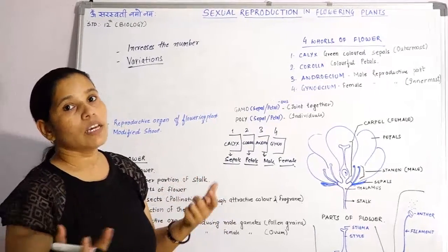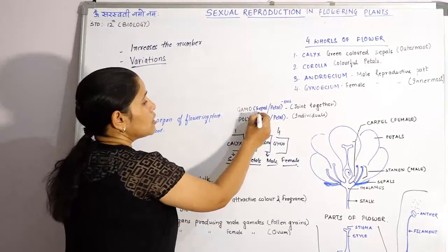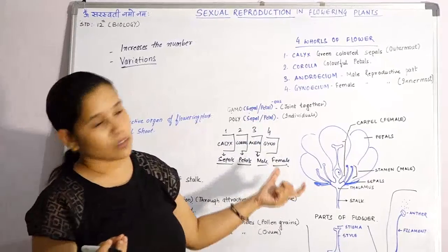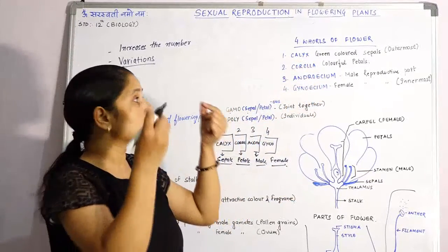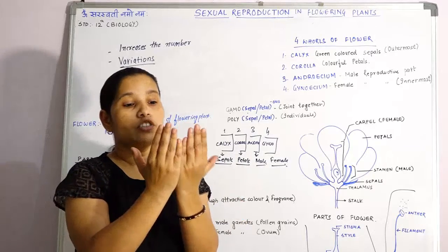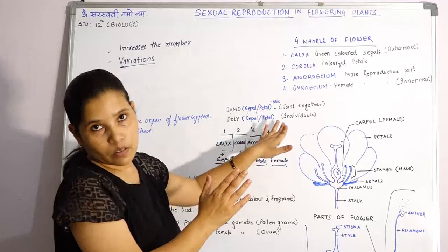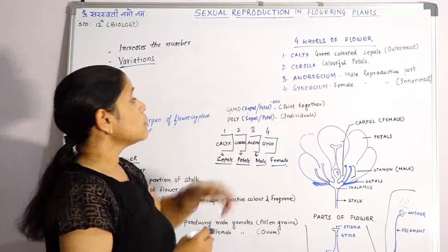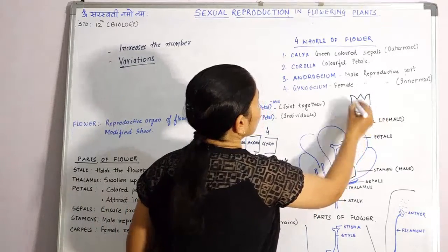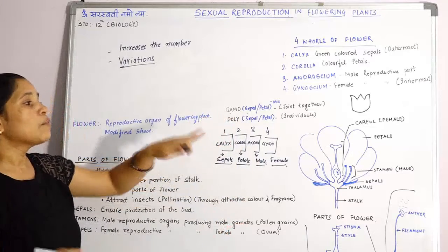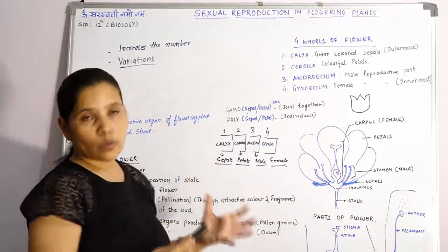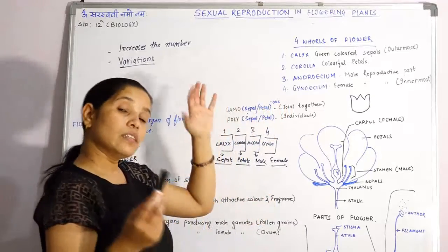Now, based on the arrangement of sepals and petals, we have two different terms. Gammo means joined together. When the sepals are joined together and cannot be separated, they are known as gamosepalous. In many flowers you have seen this kind of structure — when they are fused with no separation, you can't divide them, so that case is known as gamosepalous.